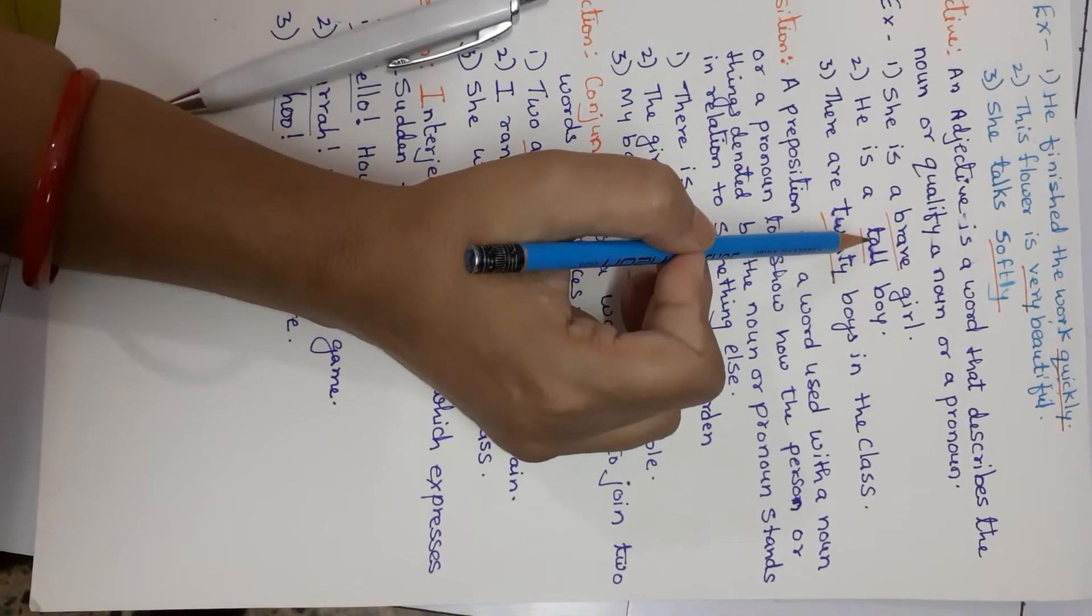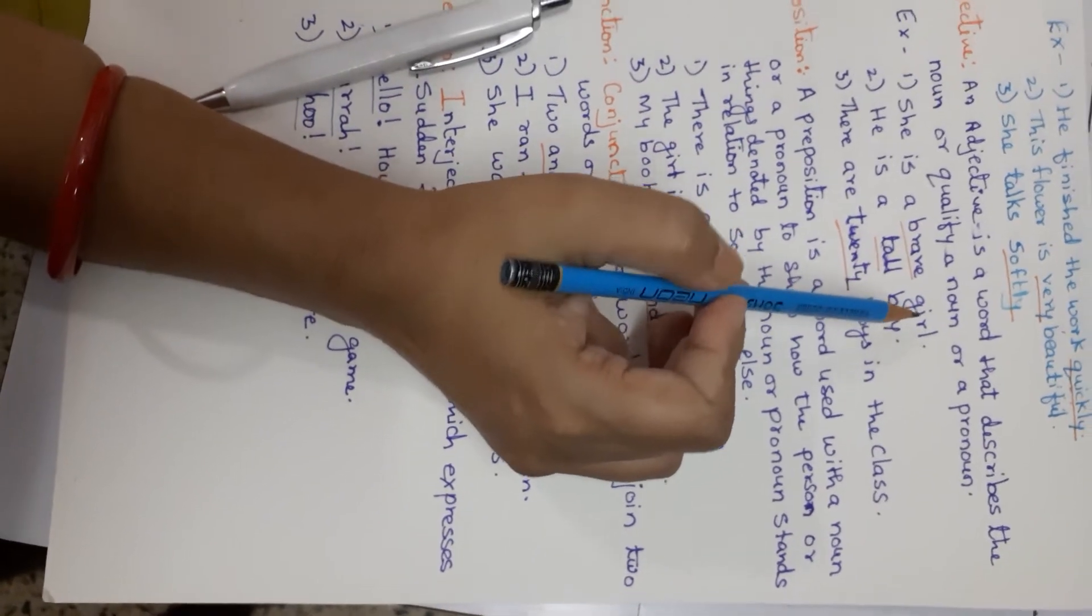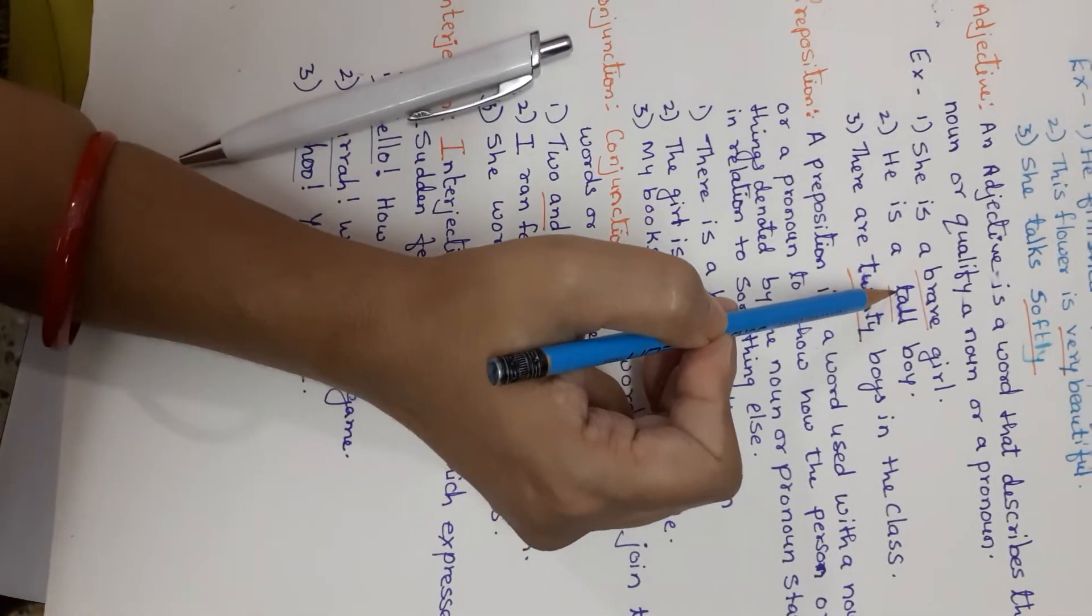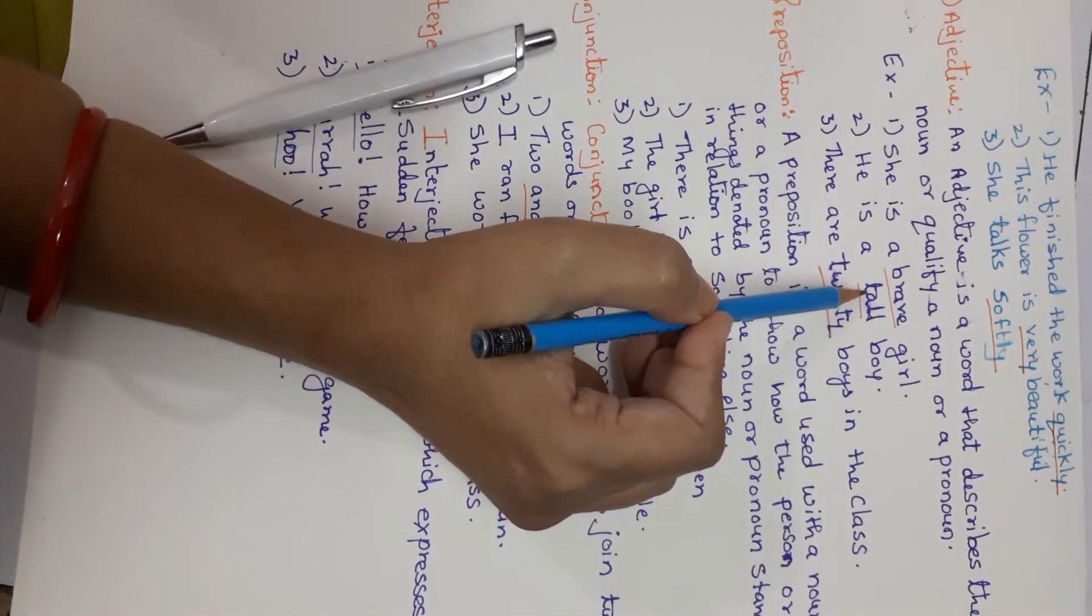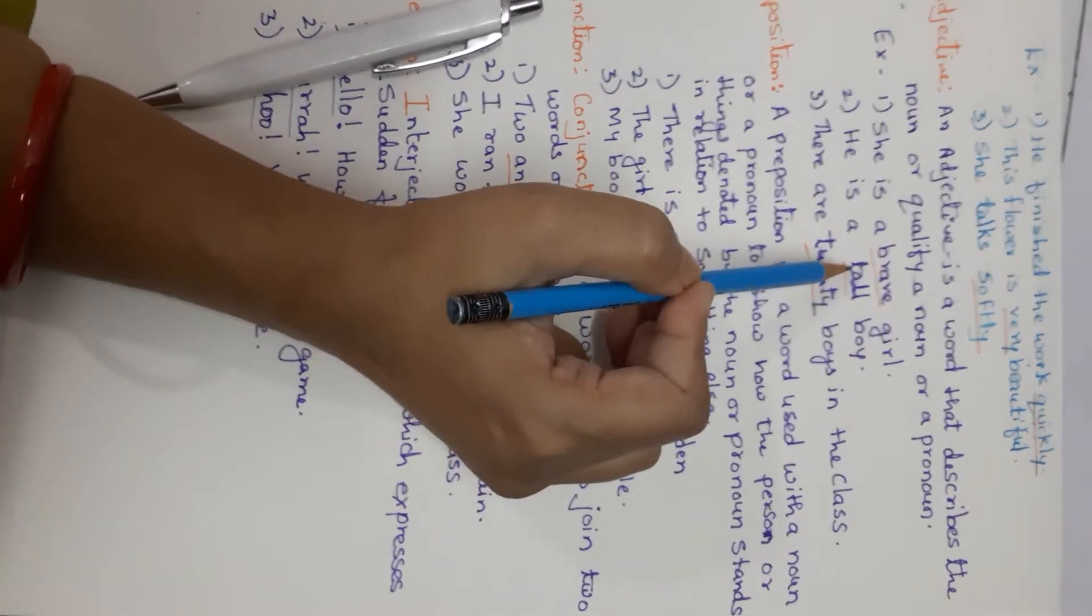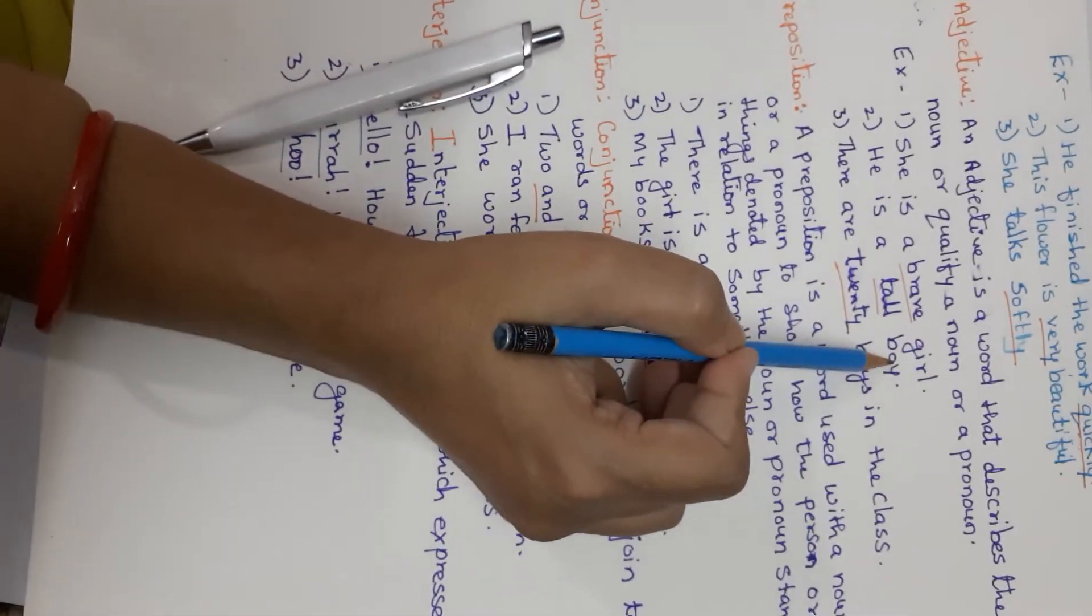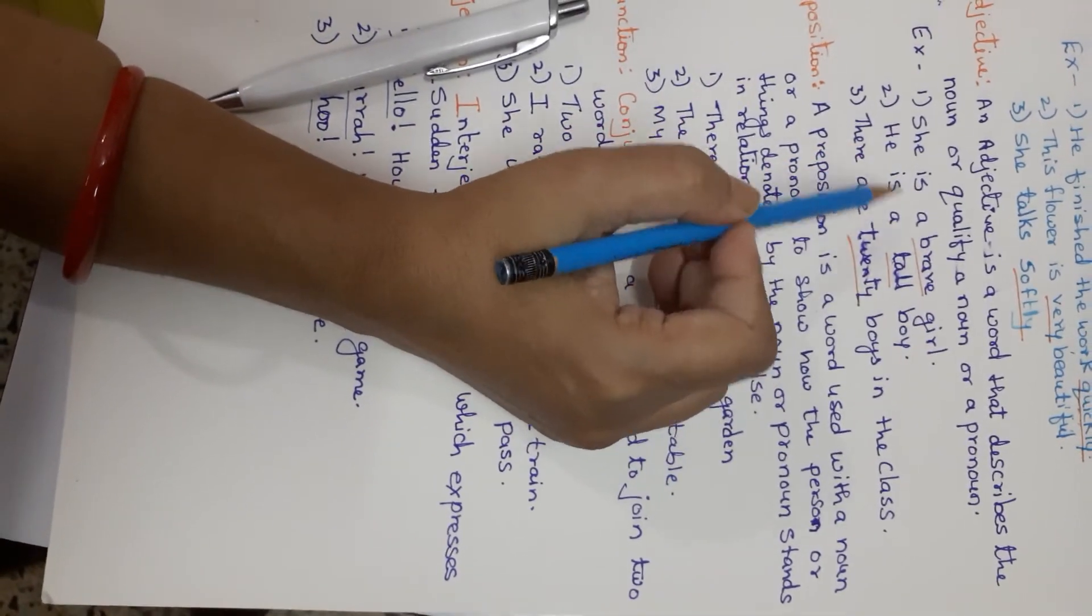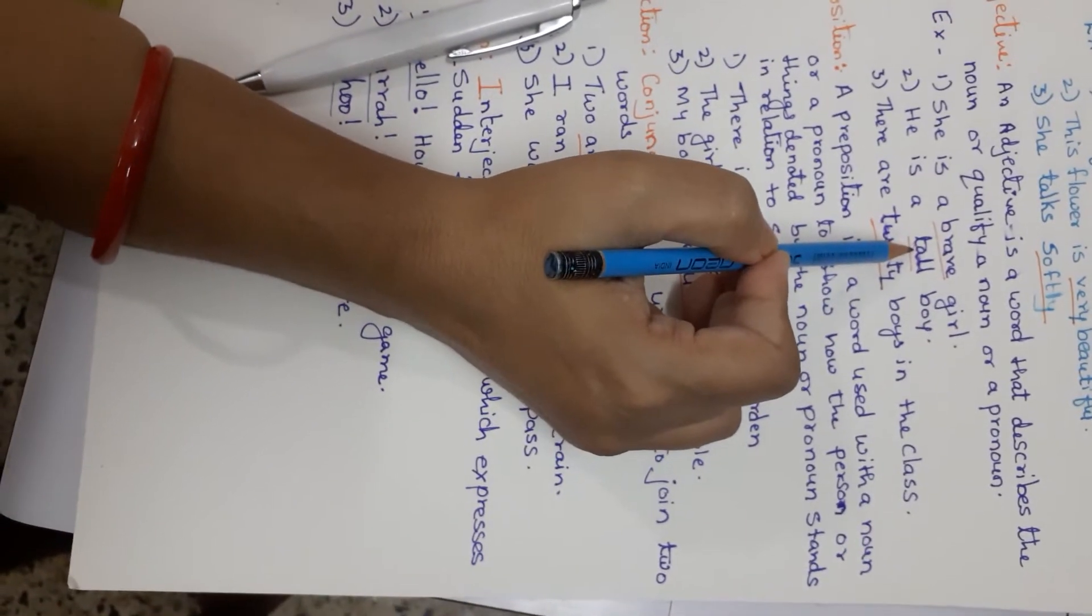So he is a tall boy. Saying something about the noun. Qualification about the noun. It is describing. Here it is described about the noun. He is a tall boy. Description is given. You are a brave girl.